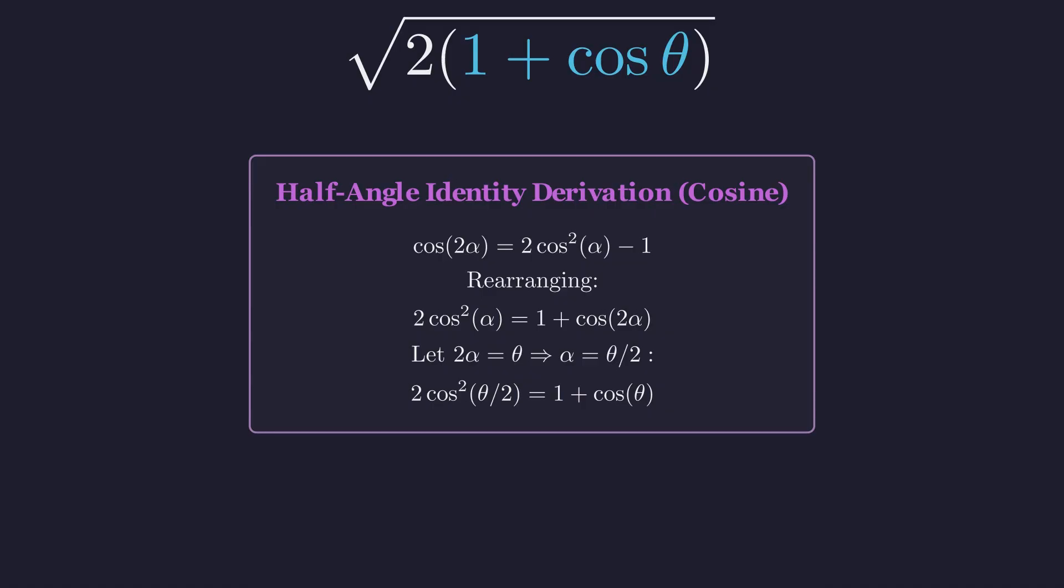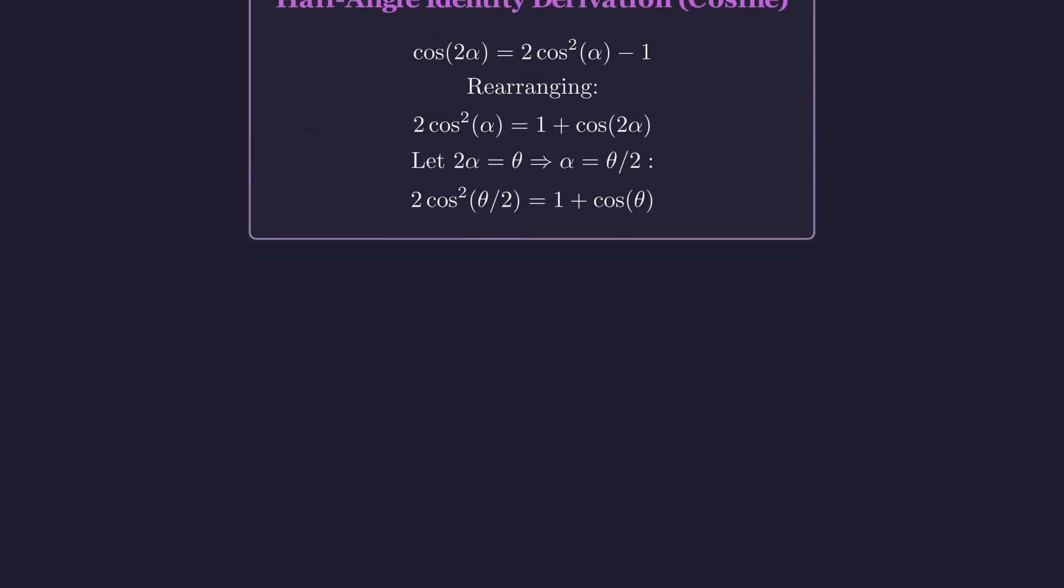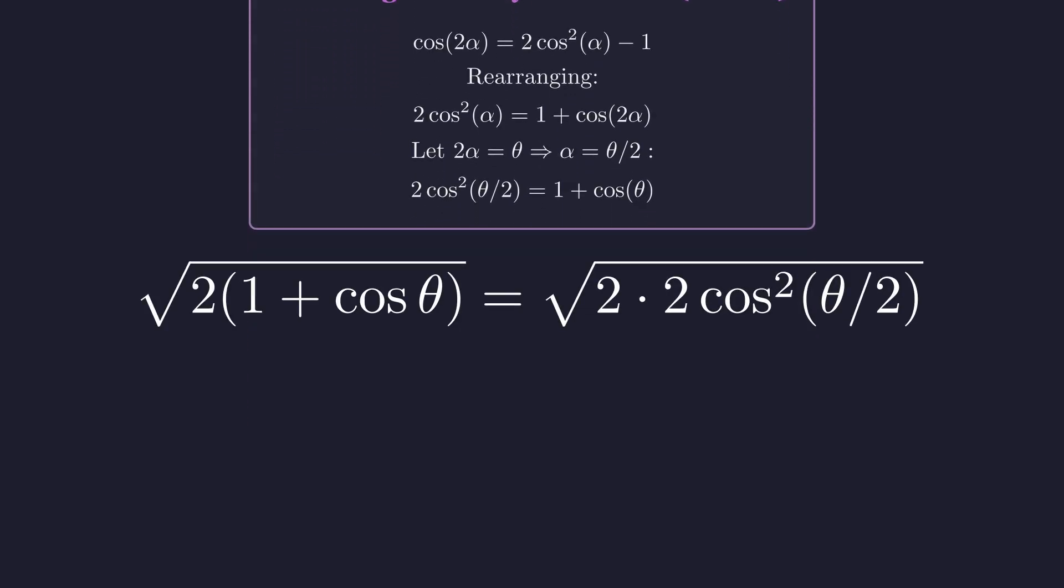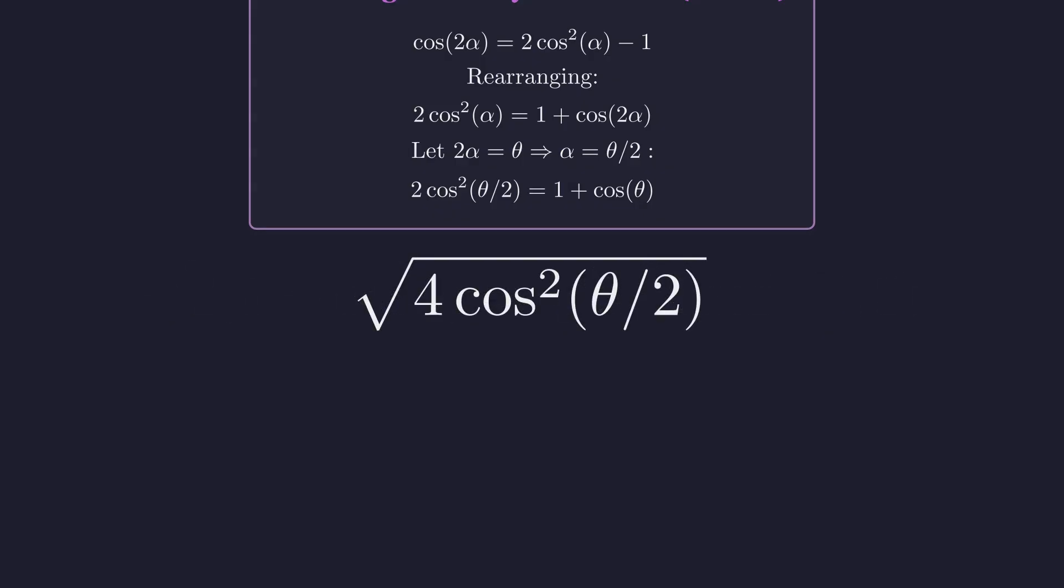Now we can replace 1 plus cosine θ with 2 cosine squared of θ over 2. Multiplying 2 times 2 gives us 4, so the expression becomes the square root of 4 cosine squared of θ over 2. Since θ is in the first quadrant, θ over 2 is as well, making its cosine positive. Therefore we can confidently drop the absolute value, simplifying to 2 cosine of θ over 2.